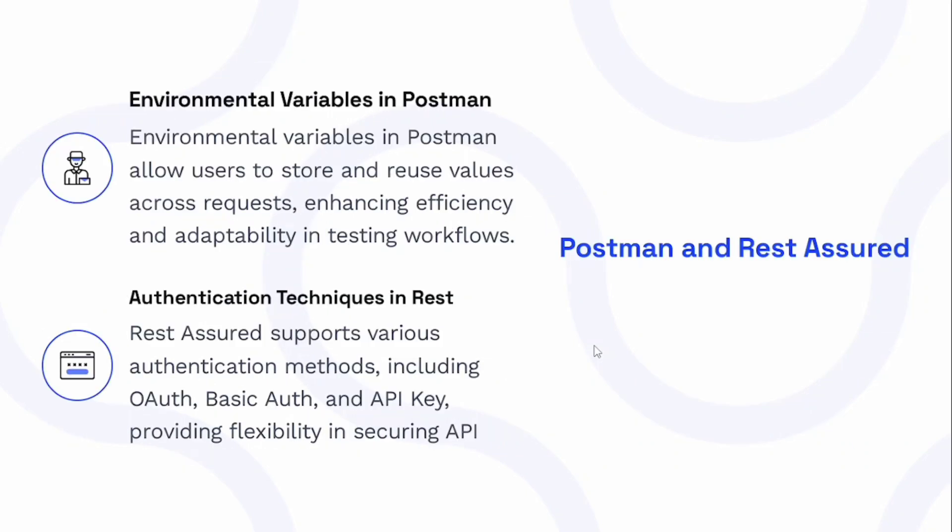The next set covers Postman and REST Assured. Environmental variables in Postman allow users to store and reuse values across requests, enhancing efficiency and adaptability in testing workflows. For authentication techniques in REST Assured, it supports various authentication methods including OAuth, basic auth, and API key auth, providing flexibility in securing APIs.